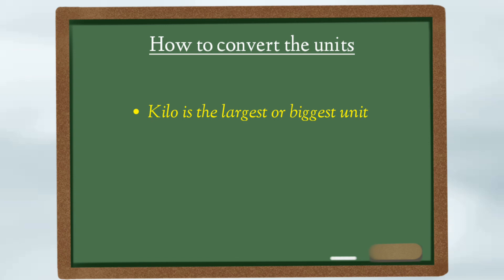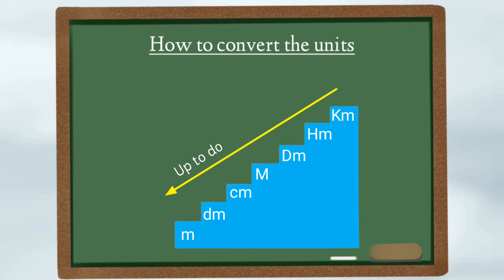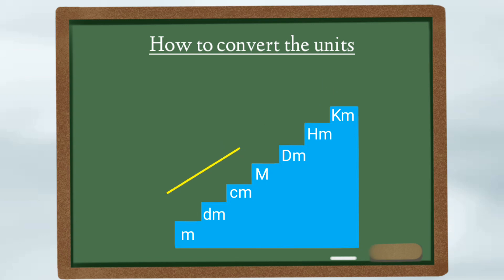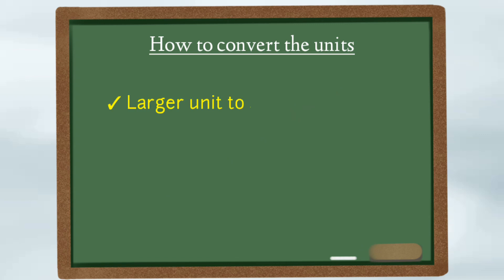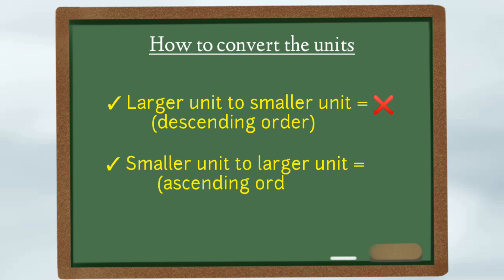Now let's learn how to convert between units. We should know that kilo is the largest unit and milli is the smallest unit. When we move from top to bottom we always multiply, and when we move from bottom to top we always divide. So whenever we convert from a larger unit to a smaller unit — moving in descending order — we multiply, and when we convert from a smaller unit to a larger unit — ascending order — we always divide.